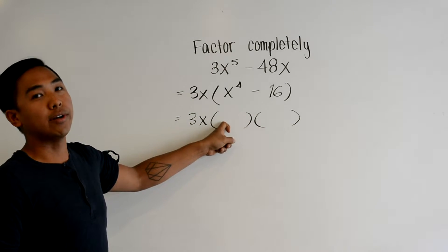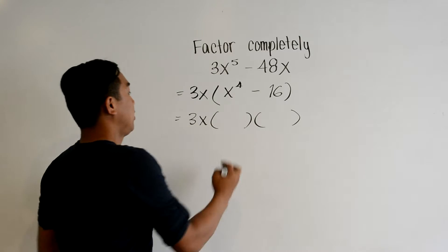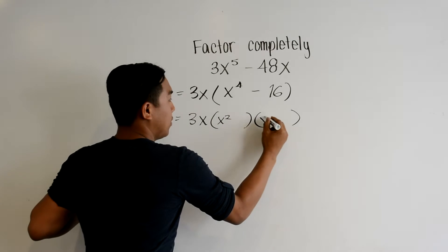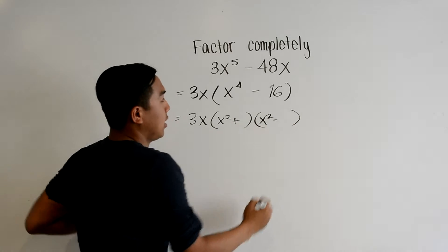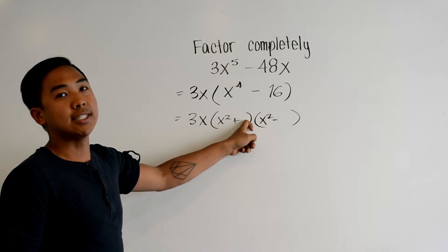That means this one is the square root of x to the power 4 which is x squared, a positive negative sign, and then this is the square root of 16 which is 4.